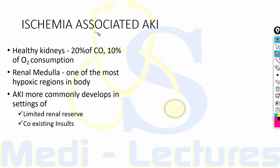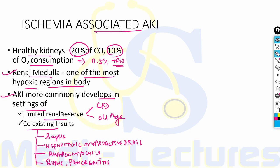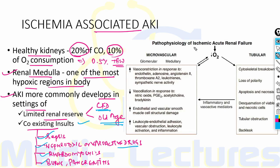Healthy kidneys receive 20 percent of cardiac output and 10 percent of total oxygen consumption despite comprising only 0.5 percent of total body weight. The renal medulla is one of the most hypoxic regions in the body, making it susceptible to ischemia-associated AKI. AKI develops more commonly in settings of limited renal reserve such as CKD and old age, and coexisting insults like sepsis, nephrotoxic drugs, vasoactive drugs, rhabdomyolysis, burns, and pancreatitis.